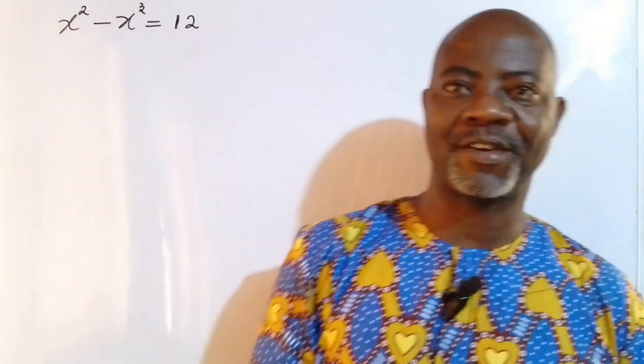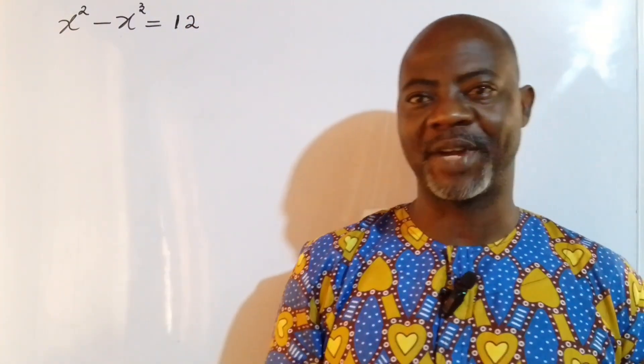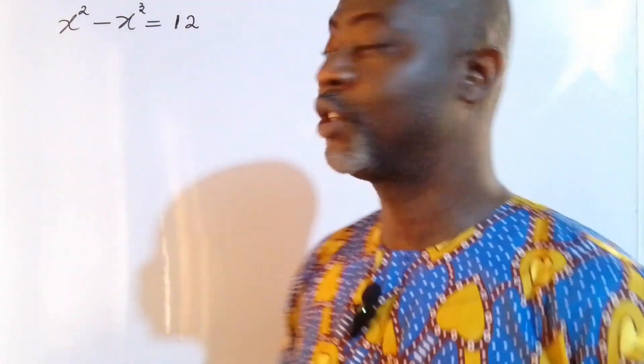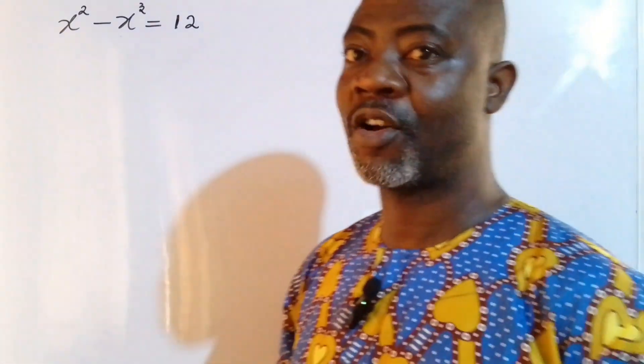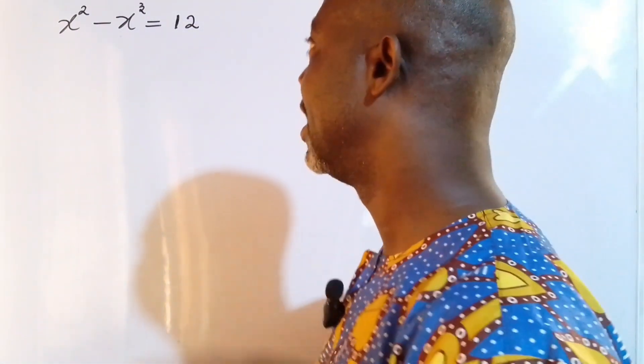Hello guys, welcome back once again to my channel. I have this beautiful third-degree equation — what you can call the cubic equation — on the board, and it's an Olympiad question. What we are going to do in this class is find all the values of x, both the real values and the imaginary values.